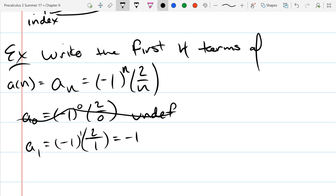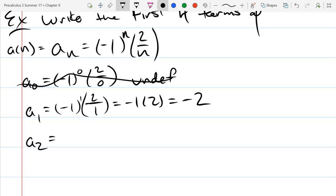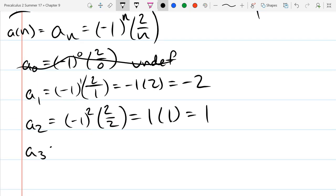And negative 1 to the first is negative 1 times 2, so our first term is negative 2, our second term, just looking up here, replacing n with 2. Negative 1 squared is positive 1, 2 over 2 is positive 1, so our next term is 1. a3, negative 1 cubed, so negative 1 cubed is still negative 1, 2 times 2 thirds, so that's negative 2 thirds, and I want the first 4 terms.